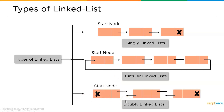A singly linked list node has two parts: the node element, where the data is stored, and the address part, which points to the next node in the list.